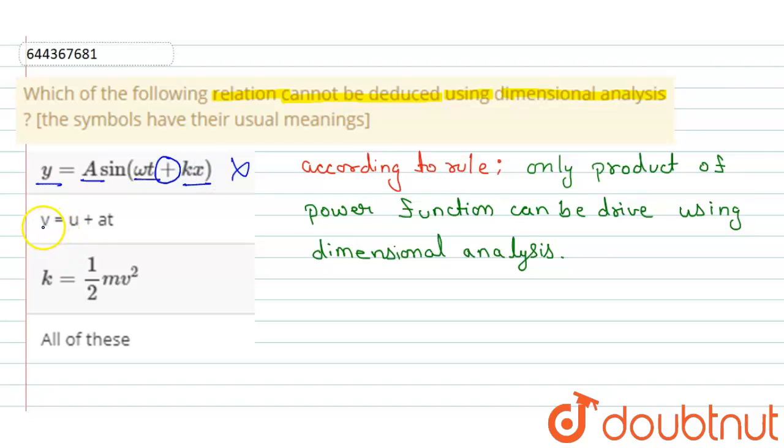Now option B is v equals u plus at. Here also there is a summation, so we cannot deduce using dimensional analysis. If this were in product form, then we could do dimensional analysis easily according to the rule.